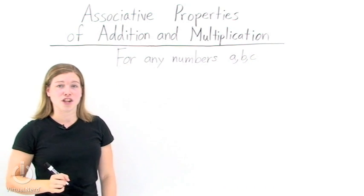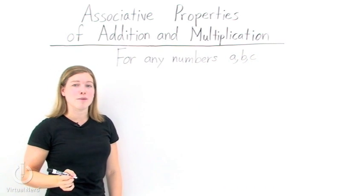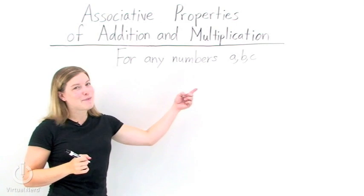Let's look at the associative property of addition first. If we take three numbers, say, A, B, and C.